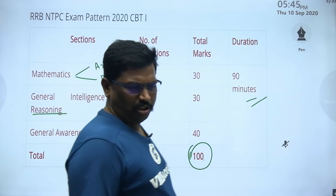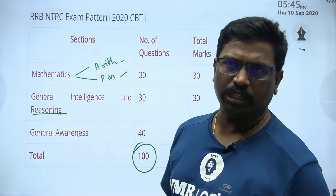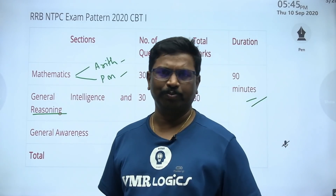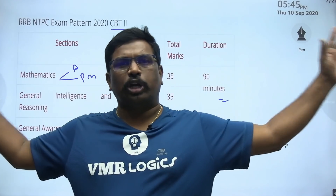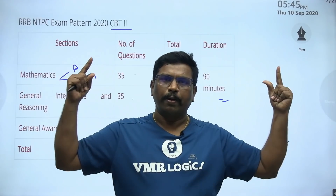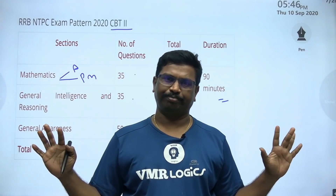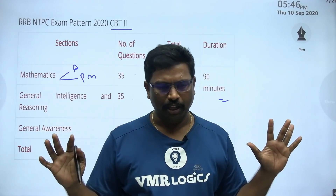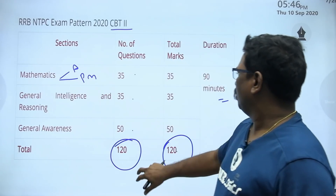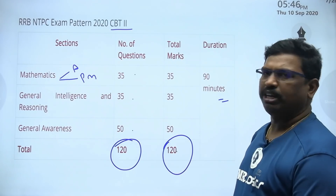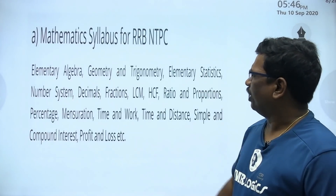General Awareness allows you to manage time a little more. But when you do CBT2, speed is very important — you cannot approach it like normal. You have to be fast. That means you should follow us — VMR Logics.